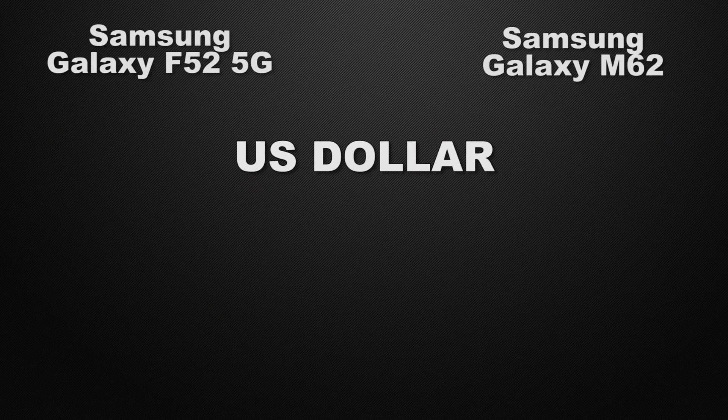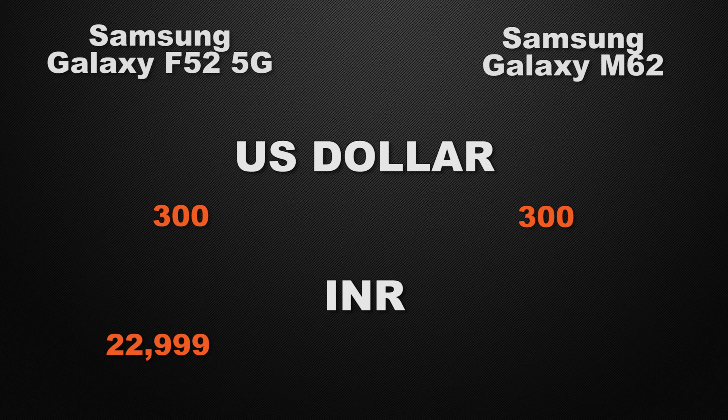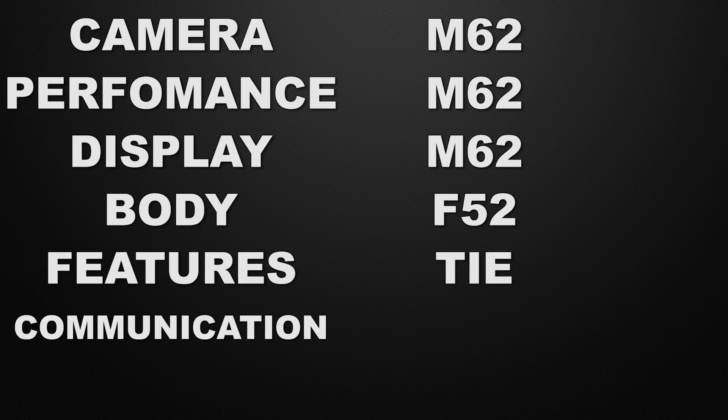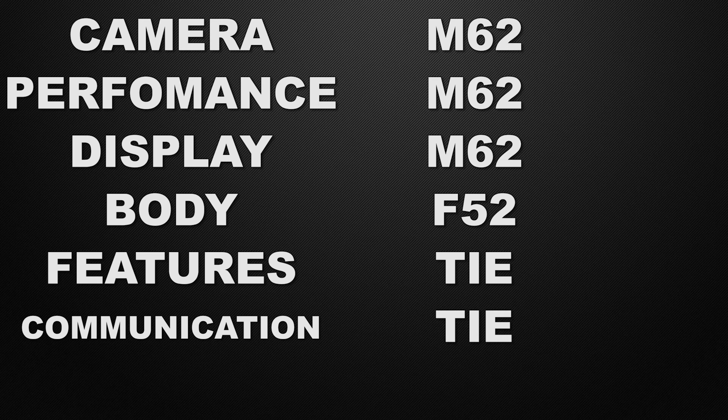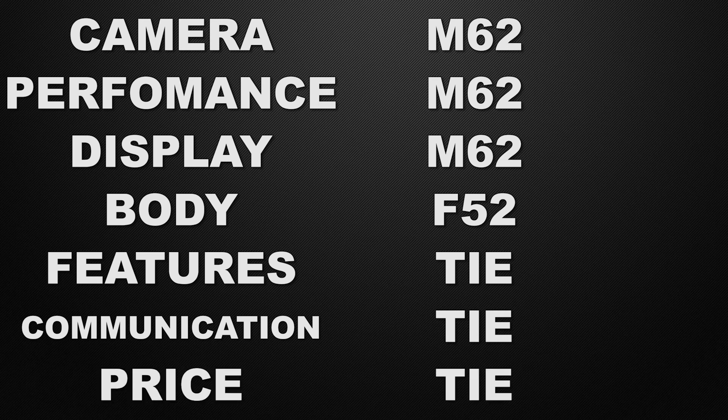Moving to the price, in the international market the starting range of the F52 is around 300 US dollars, whereas the M62 is also available from 300 US dollars. In the Indian market, the F52 starts from 23,000 rupees whereas the M62 is available from 24,000 rupees. The conclusion: in camera, performance, and display the winner is M62; in body the winner is F52; in features and communication chips it's a tie; and in price it's a tie.